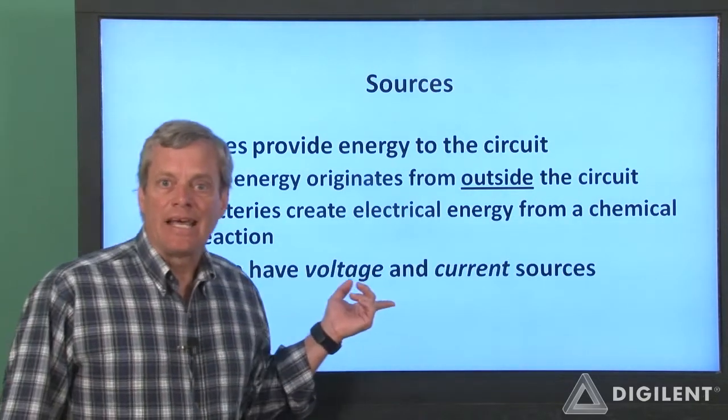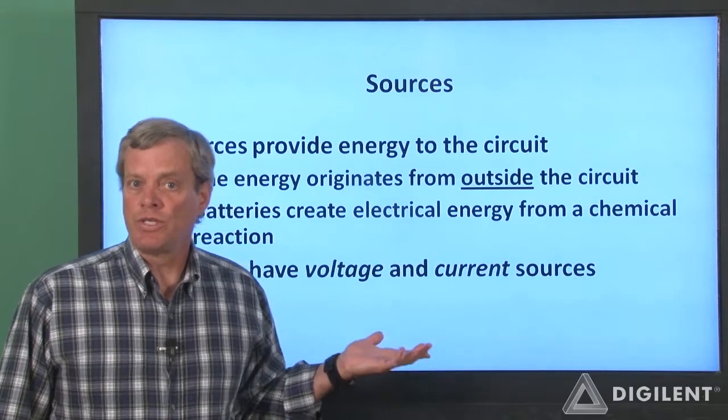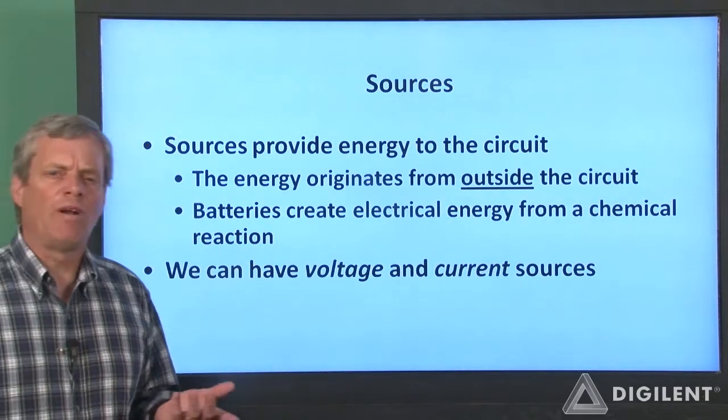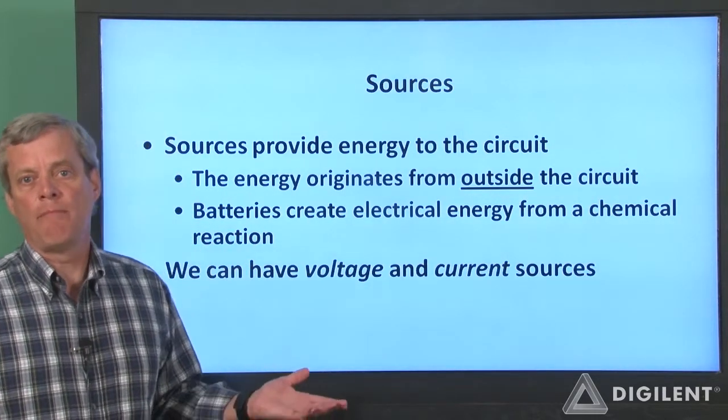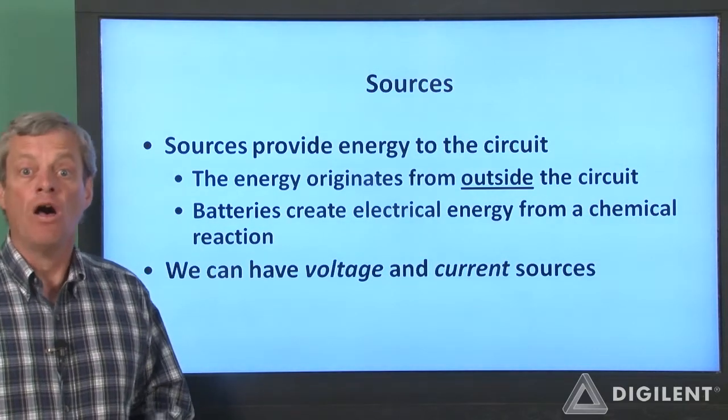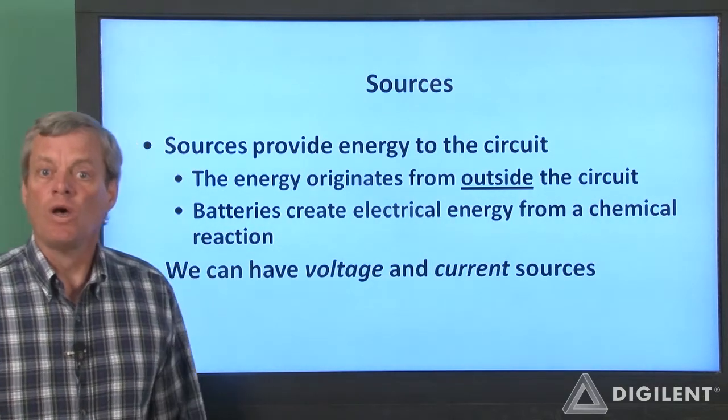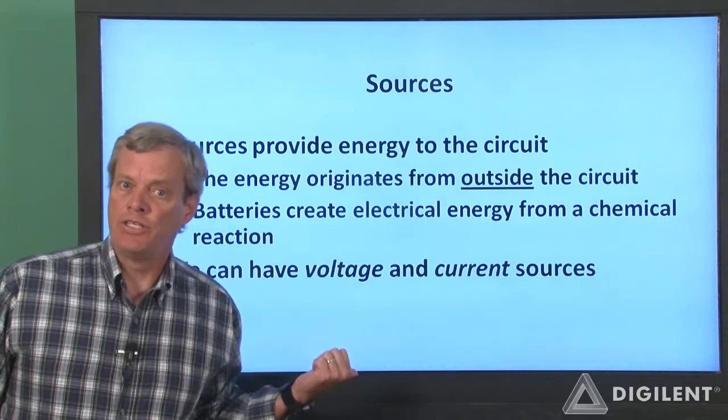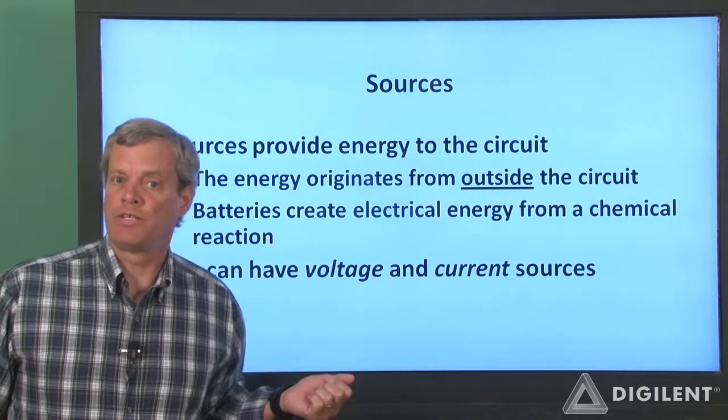We can have two basic types of sources, voltage sources and current sources. We're relatively familiar with voltage sources. Batteries and the analog discovery voltage and waveform generator instruments all act like voltage sources. We'll talk about current sources in some later projects after we introduce transistors.